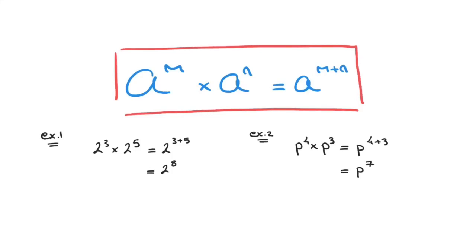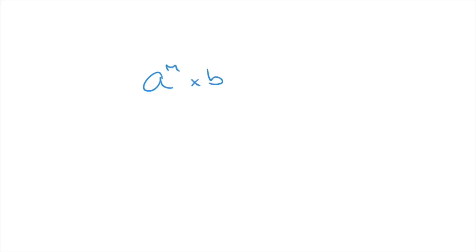That's the rule for multiplication of powers when the base of the two numbers is the same — we had a raised to a power times a raised to a power. When the base is different, things change a little bit. If we have a raised to the power of m times b raised to the power of n, then that is simply equal to itself: a to the power of m times b to the power of n. I'll go ahead and box that result.